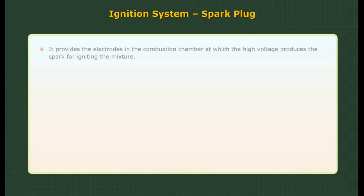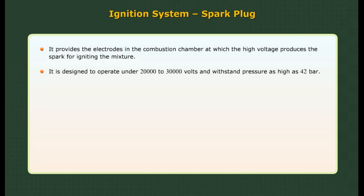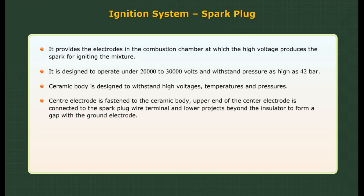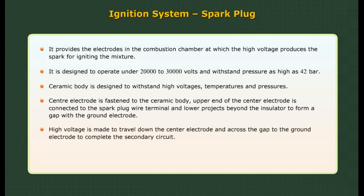Spark plug: It provides the electrodes in the combustion chamber at which the high voltage produces the spark for igniting the mixture. It is designed to operate under 20,000 to 30,000 volts and withstand pressures as high as 42 bar. The ceramic body is designed to withstand high voltages, temperatures, and pressures. The center electrode is fastened to the ceramic body, with its upper end connected to the spark plug wire terminal and its lower end projecting beyond the insulator to form a gap with the ground electrode. High voltage travels down the center electrode and across the gap to the ground electrode to complete the secondary circuit.